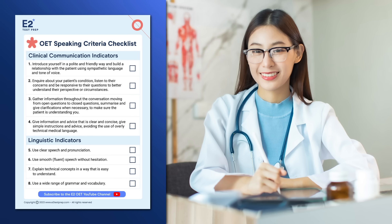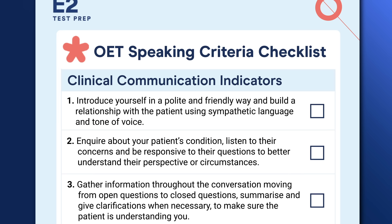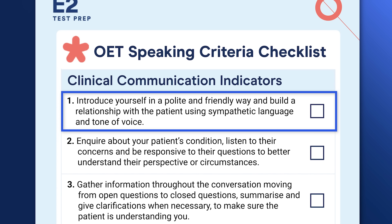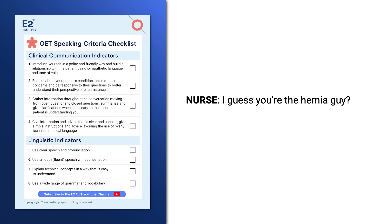Now that we've listened to the sample, let's analyze it using our speaking criteria checklist. Let's begin with how Sally started off. Checklist item one was: introduce yourself in a polite and friendly way and build a relationship with the patient using sympathetic language and tone of voice. Sally is not off to a good start — she didn't introduce herself politely at all. Referring to her patient as 'the hernia guy' is unprofessional. Her tone is very impersonal, so she missed the opportunity to build a relationship with her patient.